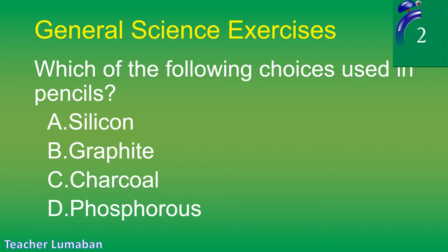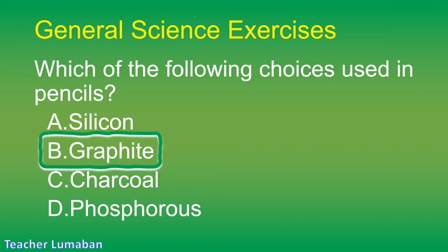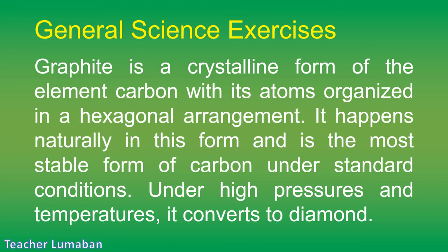The correct answer is Letter B: graphite. Graphite is a crystalline form of the element carbon with its atoms organized in a hexagonal arrangement. It happens naturally in this form and is the most stable form of carbon under standard conditions. Under high pressures and temperatures, it converts to diamond.